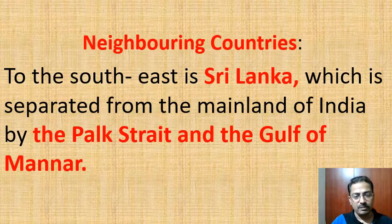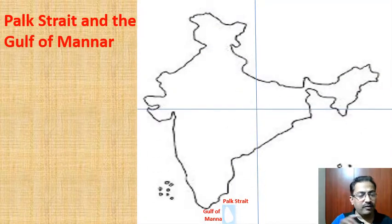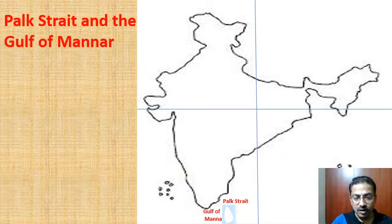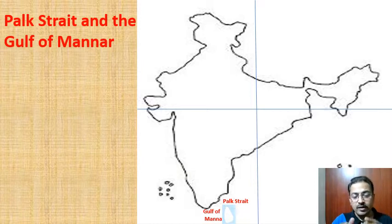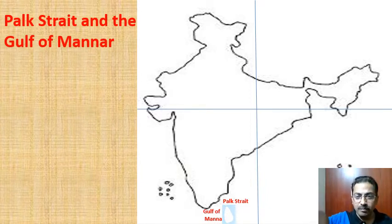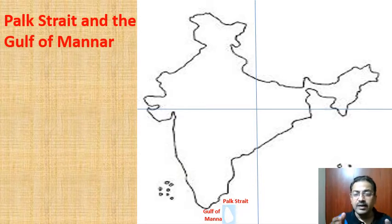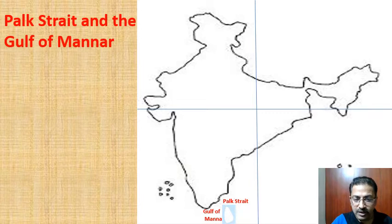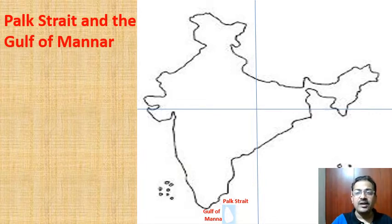Here is Palk Strait and Gulf of Mannar shown on the map. You can observe India's mainland and Sri Lanka here. To the south of Palk Strait is the Gulf of Mannar, and to the north of the Gulf of Mannar is Palk Strait. A strait is a narrow passage of water body separating two big water bodies — here, the Bay of Bengal and the Indian Ocean. A gulf is an inlet of water deep inside the land. All these can be asked to locate in the exam, so pay attention to them.